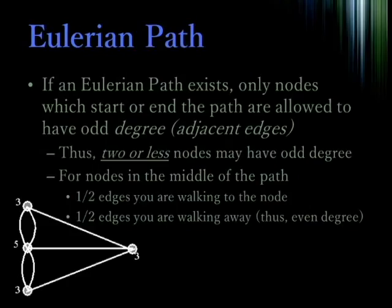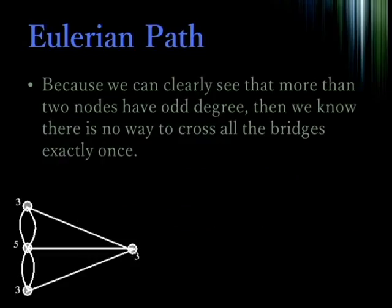Let's say you started at a node, and you entered another node along an edge. Unless you end your path on that node, you have to leave that node again. Thus, any node which you didn't start at or end at has to have an even number of edges, half of them coming in and half of them coming out while you're taking the path. Thus, no more than two nodes in such a graph can have an odd degree. Because we can clearly see, more than two nodes in this graph had an odd degree, there is no way we could construct an Eulerian path.